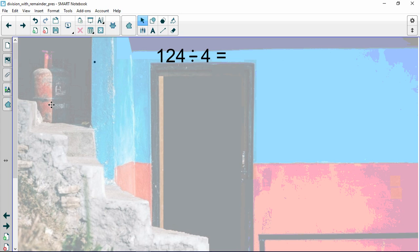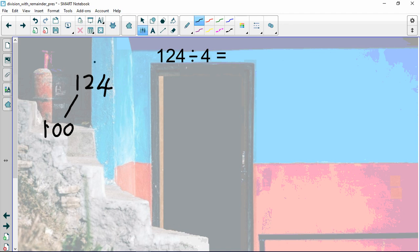But this time we're going to use two different methods just with the numbers. The first one is going to be the part-whole method, which is where we take our original number 124 and we partition it into its hundreds and its 24.